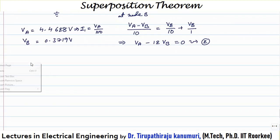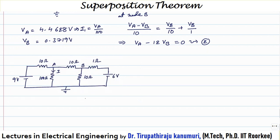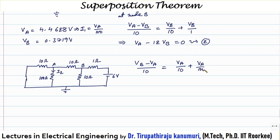Again I have pasted the same circuit. Here I am making the 9 volts battery value as 0, and for this case let us call the current I2. Applying nodal analysis at node A — since only 6 volts is present, current will flow from B to A. So the current entering is (VB minus VA) divided by 10, and the leaving currents are VA divided by 10 plus VA divided by 100. Simplifying: 21·VA minus 10·VB equals 0. This is equation number 1.